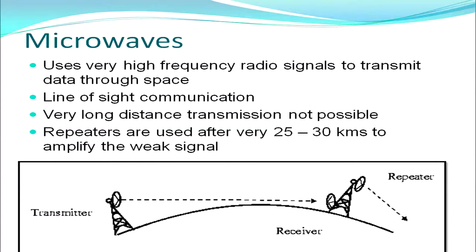Next, we move to microwaves. Twisted pair and coaxial cables were wired transmission mediums with physical wires connecting computers. Microwaves are unwired or unguided transmission mediums — very high frequency radio signals are used to transmit data through space. This type of transmission is a line-of-sight communication, meaning the transmitter and repeater must be in line of sight with no hindrance between them. Because of the curvature of the earth, very long distance transmission is not possible; repeaters must be used after every 25 to 30 kilometers to amplify the signal. For short distances, it is a very useful and economical communication medium.